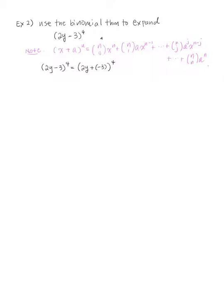Let's determine who plays the role of x, a, and n. Here, x is 2y, a is negative 3, and n is 4. Now apply that formula. So we have (2y + (−3))^4.